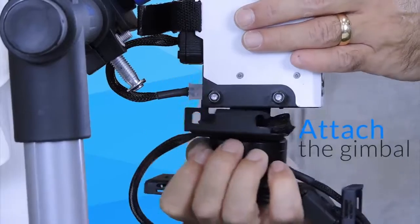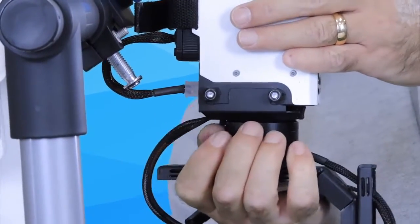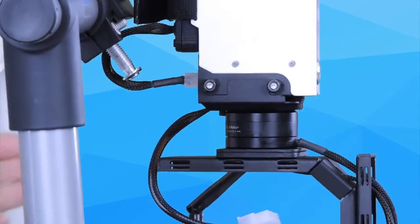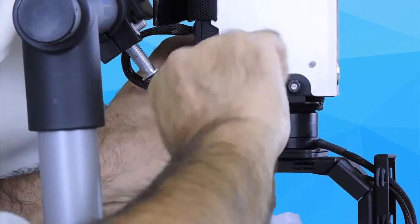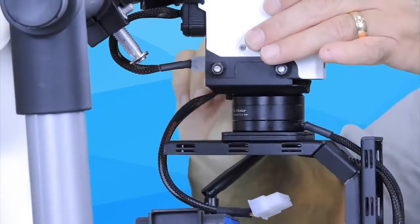Next, attach the gimbal to the flight deck by hooking the track to the screws on the bottom of the flight deck. Make sure all four corners are properly latched and use the included nut driver tool to tighten the bolts.